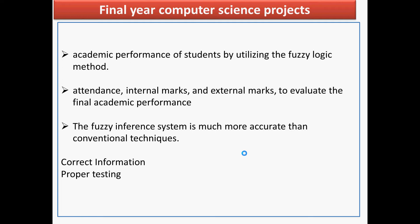The idea for implementing this academic performance system is by using the fuzzy logic method. The parameters required to implement this are: the attendance of the student, all internal evaluation marks, and whatever marks the student got in external evaluation — where copies are sent to external evaluators for checking. These will be the three parameters used to evaluate the final academic performance of the student.